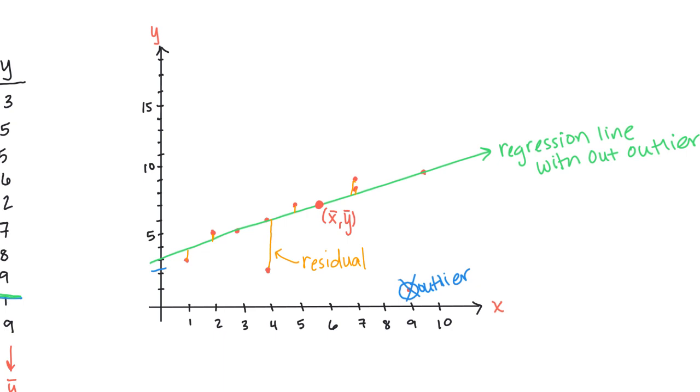The stronger the correlation between x and y, the smaller these residual values will be. The weaker the correlation between x and y, the larger the residual values will be. If we are trying to prove a correlation exists between x and y, we hope that these residual values are as close to zero as possible.